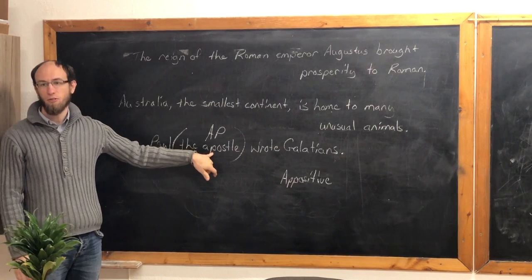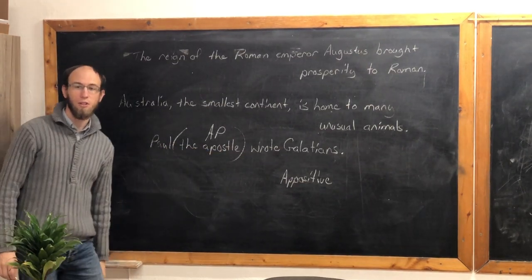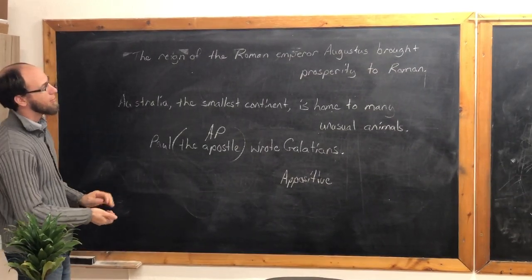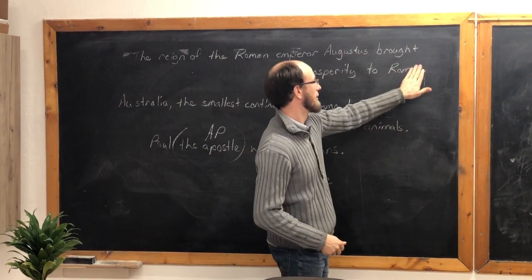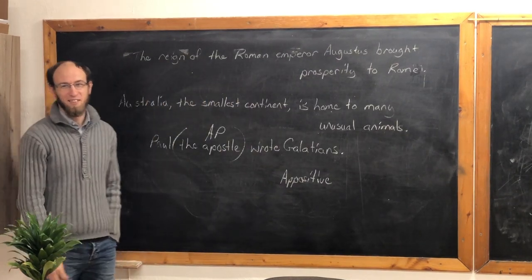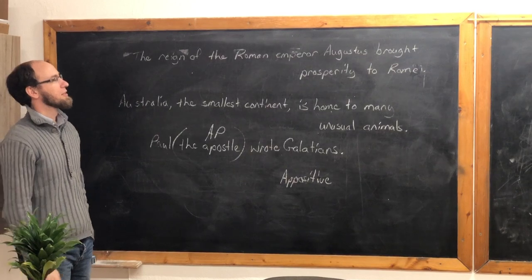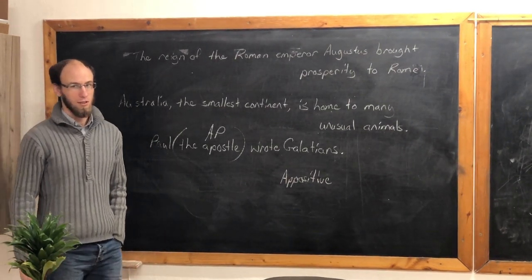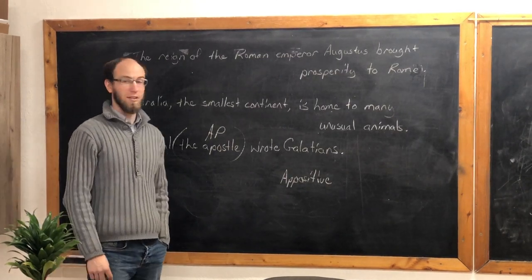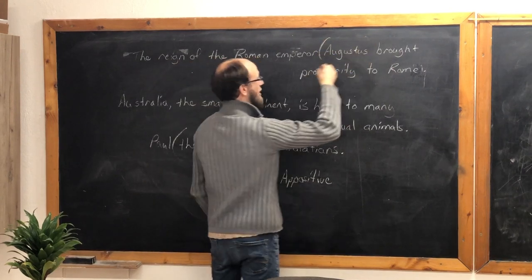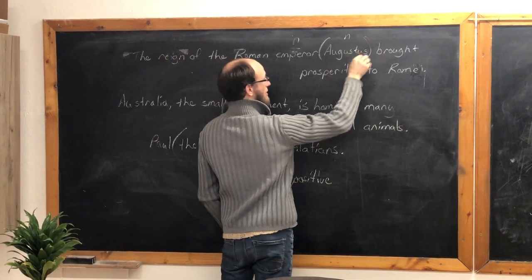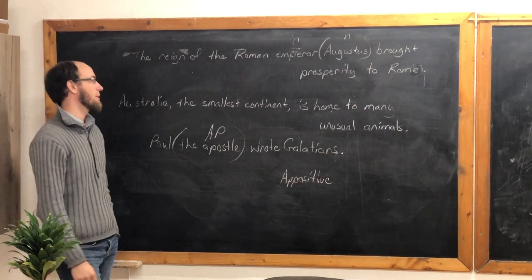The appositive is the noun itself, which would be called an appositive phrase. In this sentence: 'The reign of the Roman emperor Augustus brought prosperity to Rome.' What is the appositive there? Augustus — the second noun in the series is the appositive. Emperor Augustus brought prosperity to Rome.